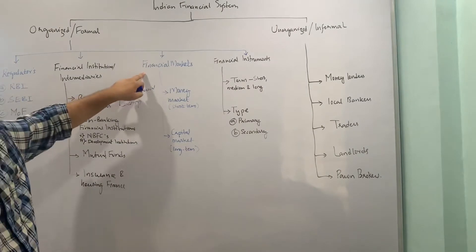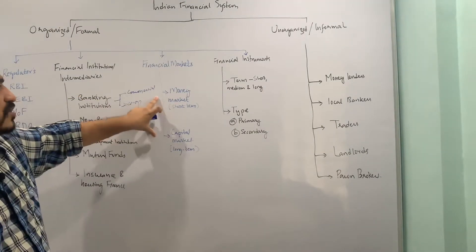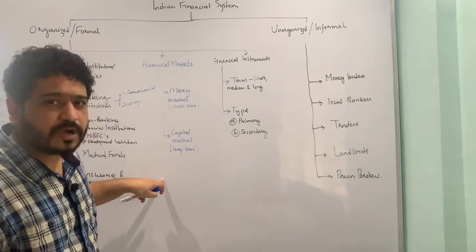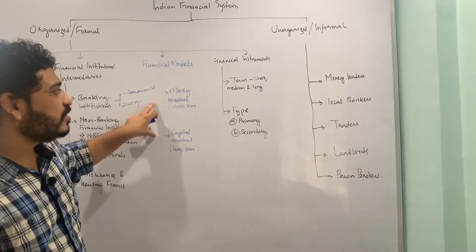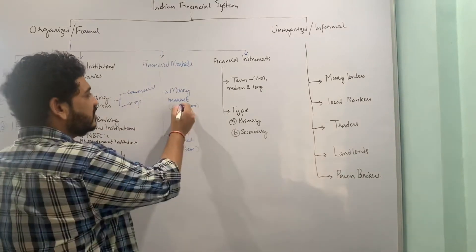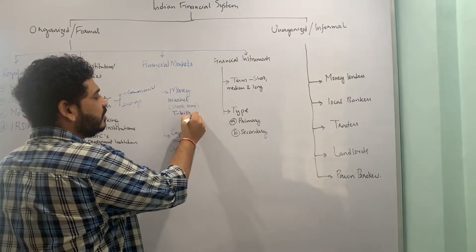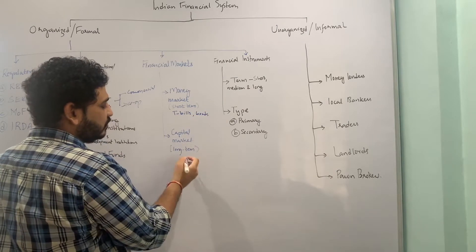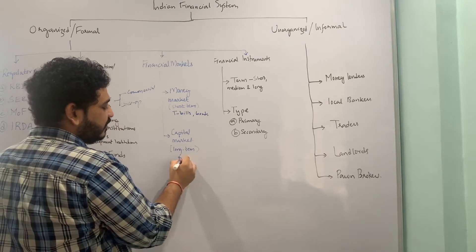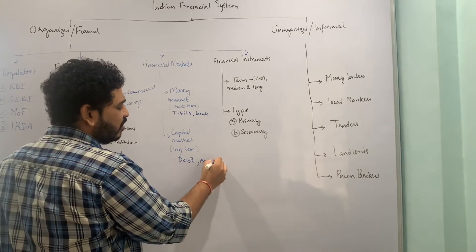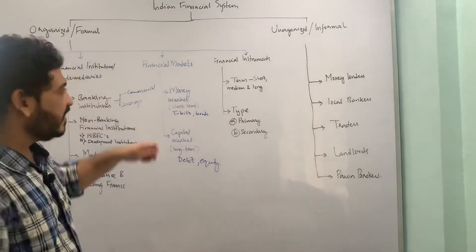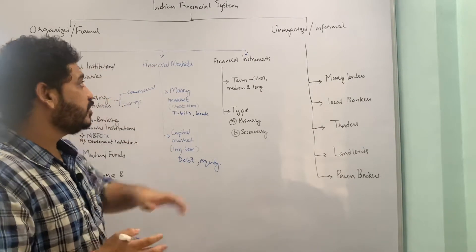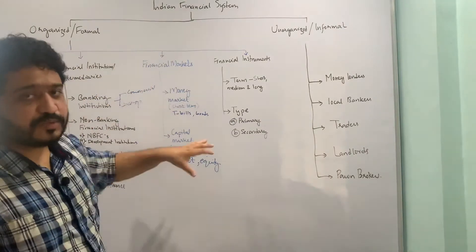Let us now move to financial markets. There are two types of markets: one is the money market, which is for the shorter term, and the other is the capital market, which is for the longer term. In the money market I will be dealing with treasury bills or bonds, whereas in the capital market I will be talking about debt or equity. I will cover all of these in greater detail in individual lectures.